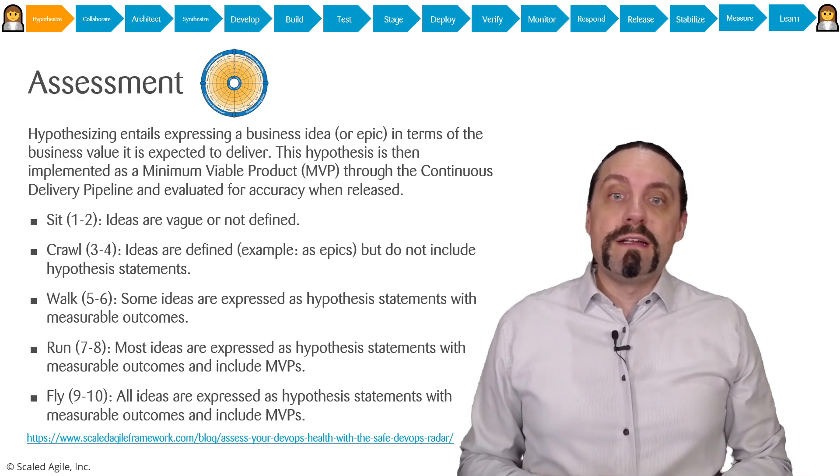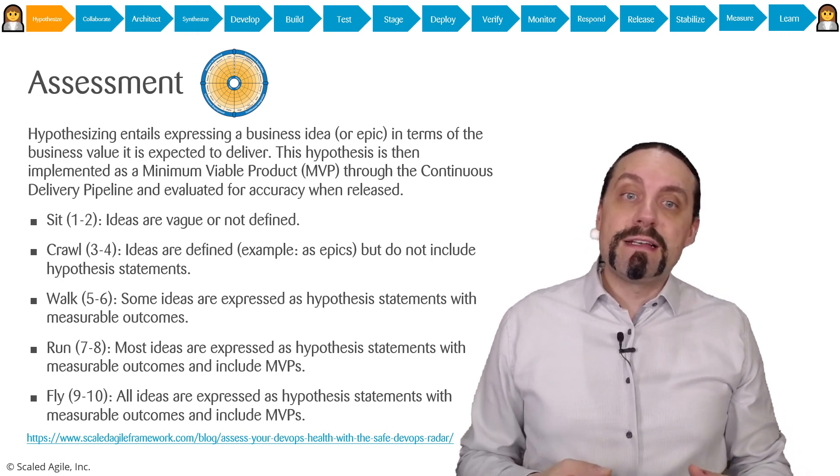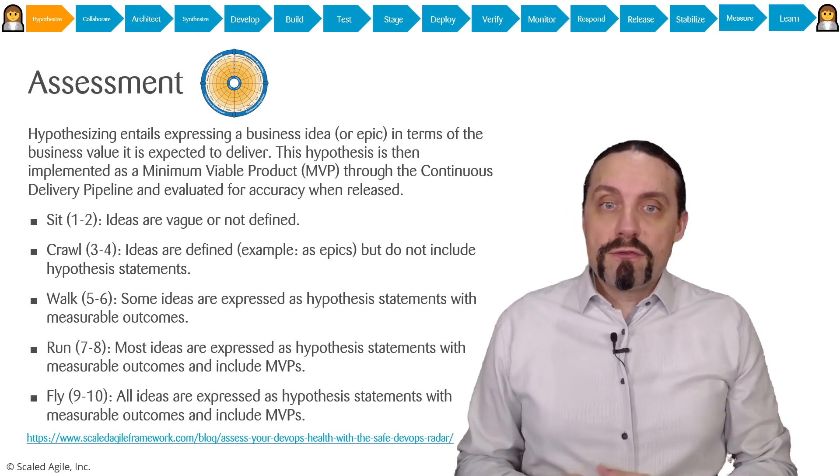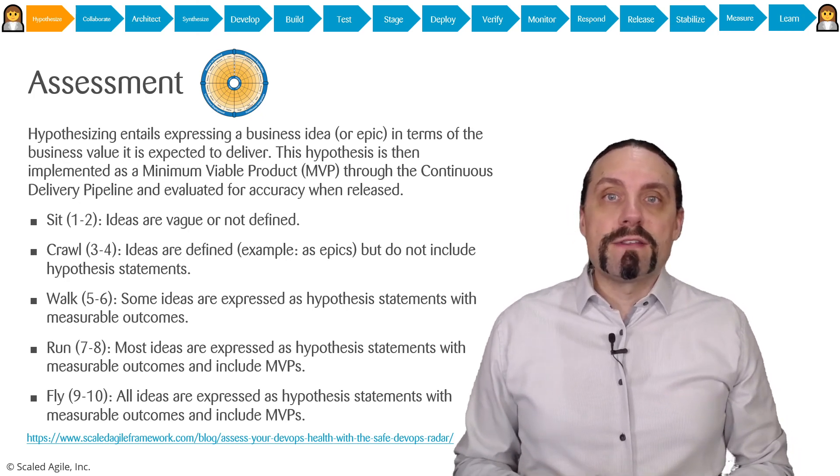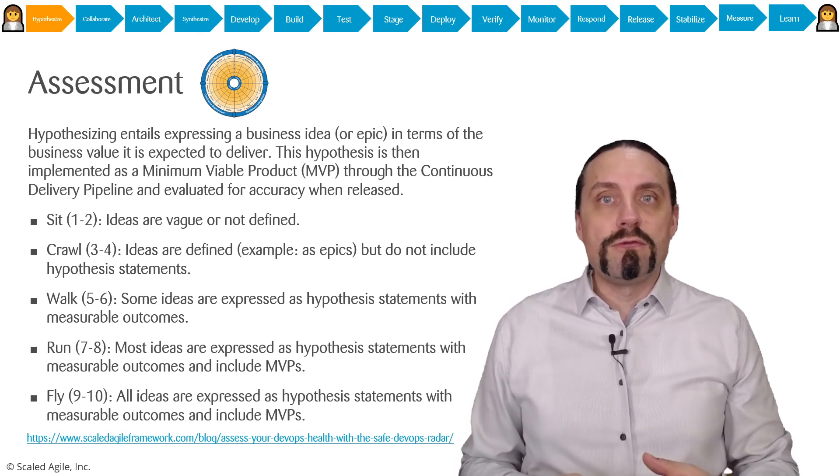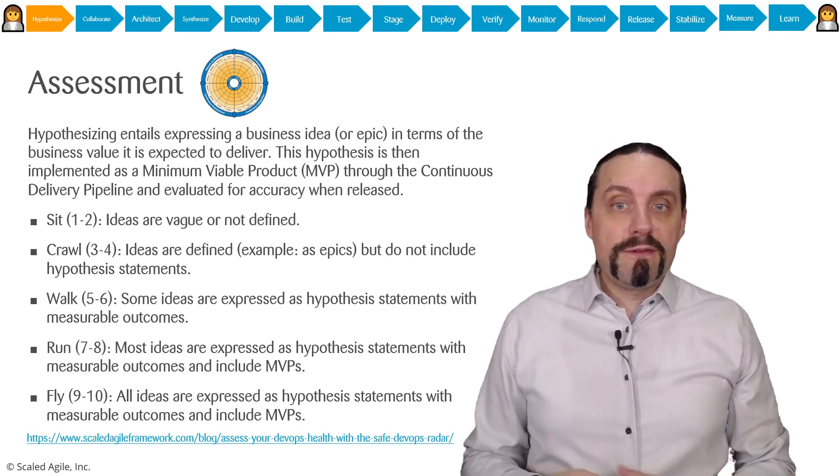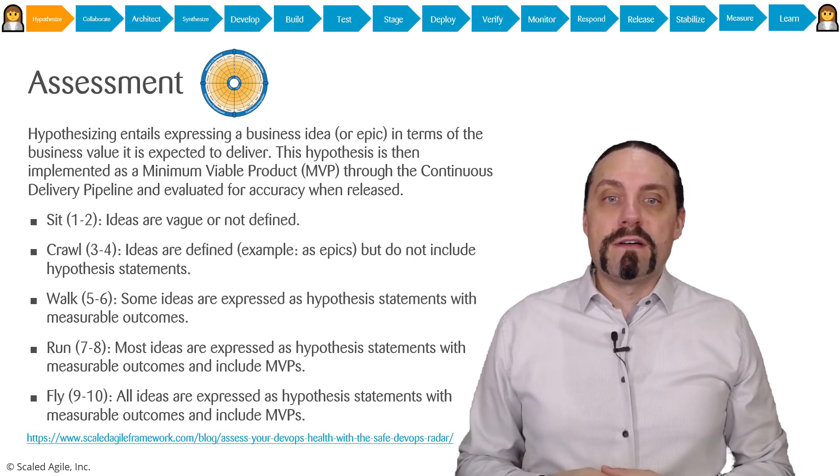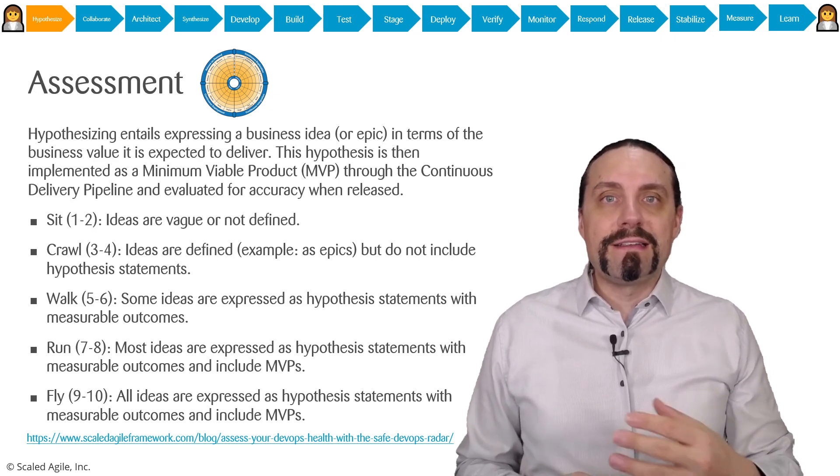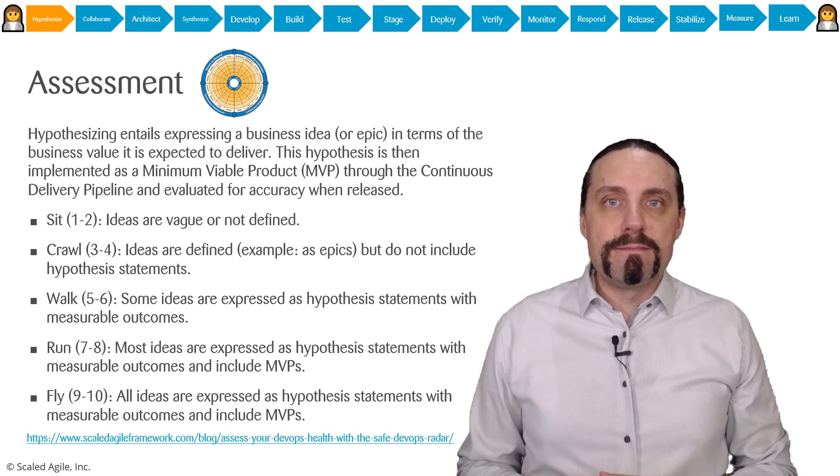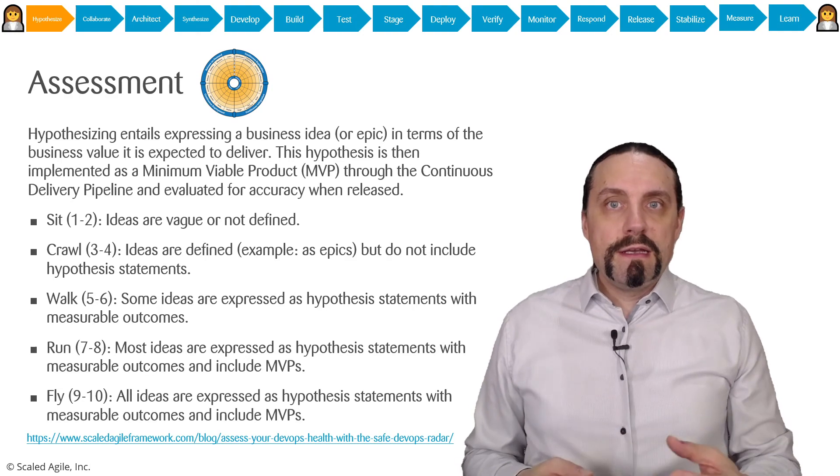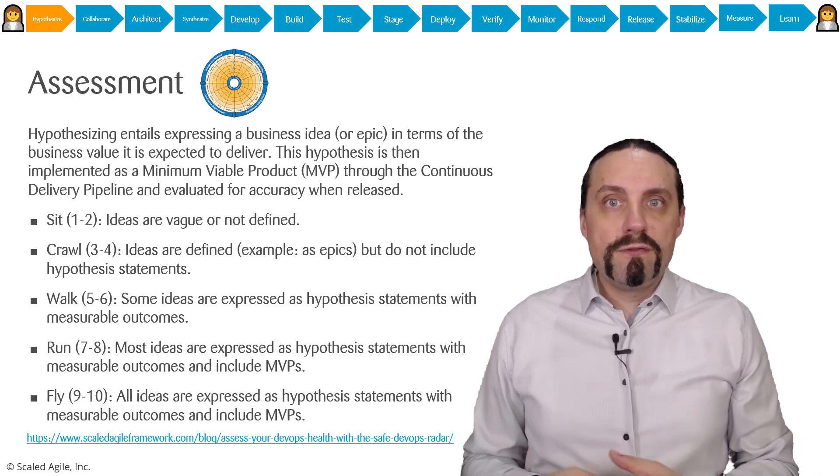You are a crawl when ideas are defined example as an epic but do not include a hypothesis statement. You are a walk when some ideas are expressed as hypothesis statement with measurable outcomes. You are a run when most ideas are expressed as hypothesis statements with measurable outcomes and include MVPs. And you are a fly when all ideas are expressed as hypothesis statements with measurable outcomes and include MVPs.